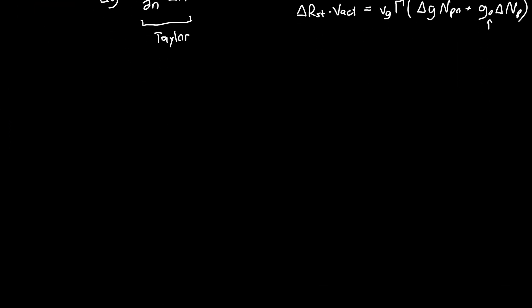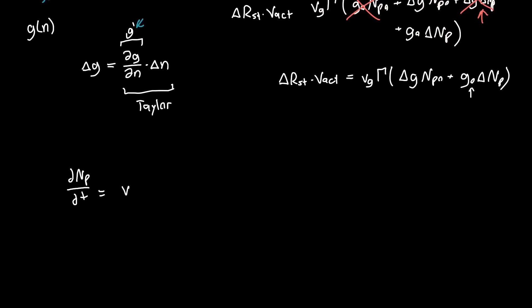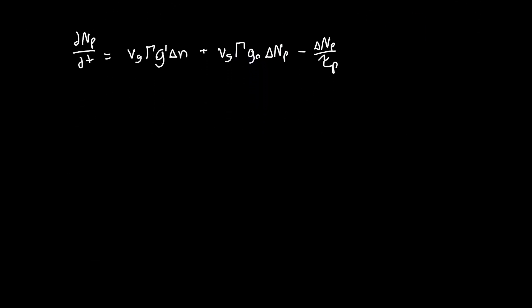Now we can rewrite our full differential equation by plugging everything in. The delta_R_stimulated term is V_g·Gamma·G-prime·delta_N, plus V_g·Gamma·G_0·delta_NP, minus delta_NP over tau_P. This is the full equation for the change in our number of photons, delta_NP, and notice it also contains delta_N, our carrier density. So this is a coupled differential equation — we need to solve it together with the carrier rate equation.